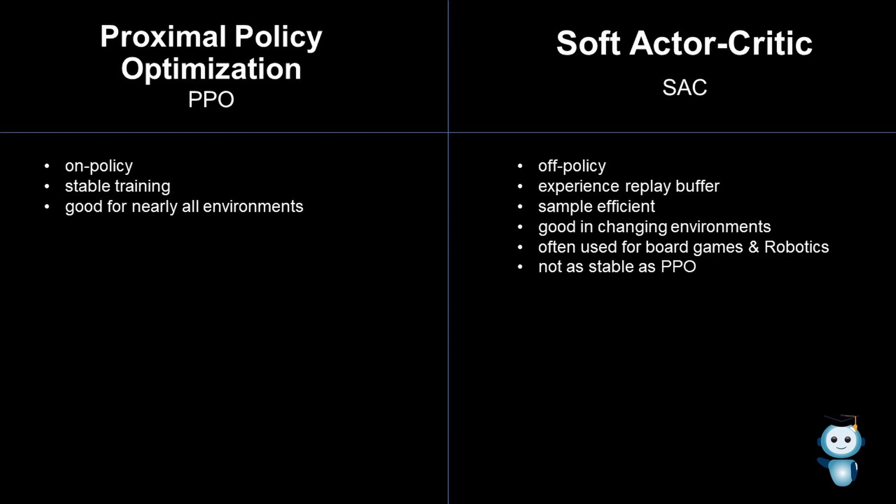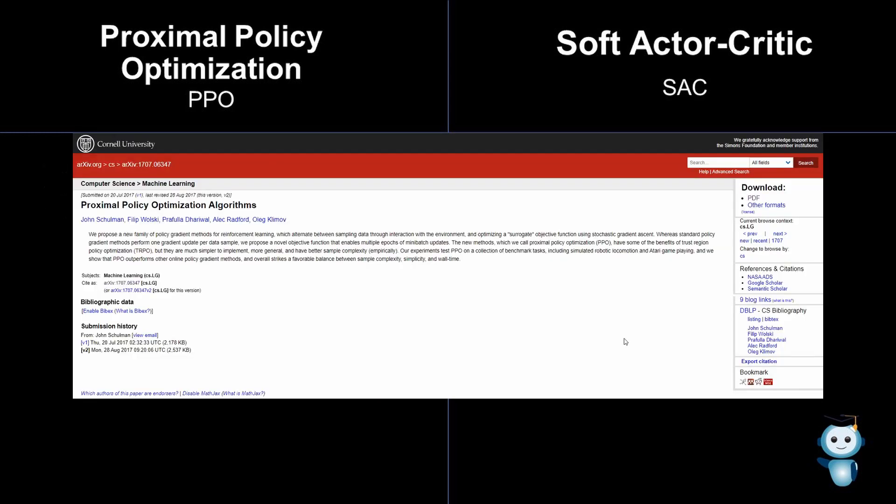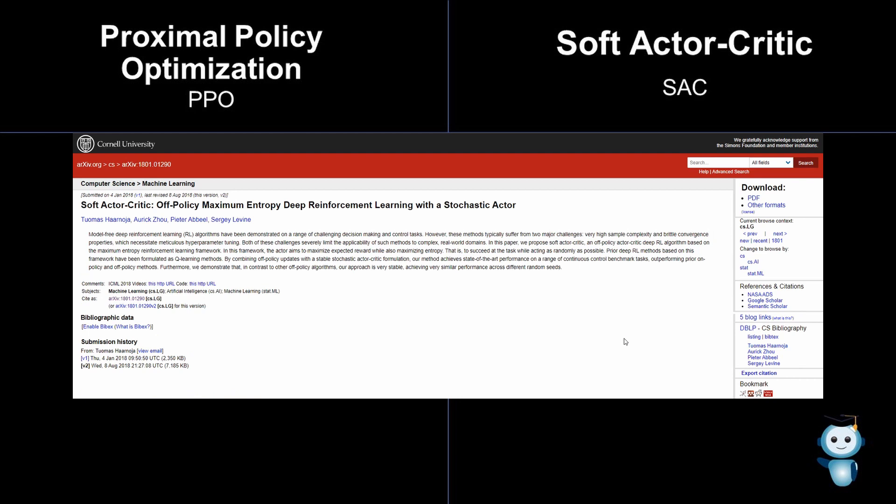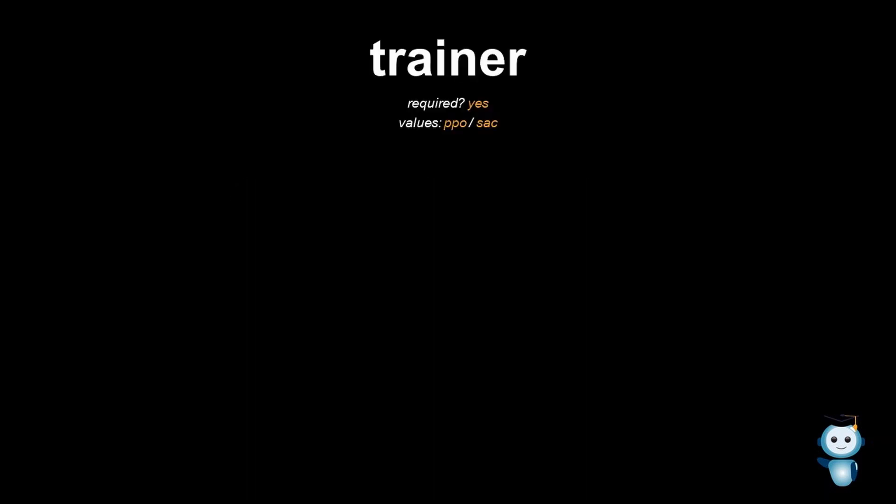I hope I could provide some intuition about when to use which algorithm. If you want to dive deep into how the algorithms work, check out the video description — I have included links to the original papers. Let's head to the configuration. The first parameter that you should provide is named Trainer, and with it you can specify whether to use PPO or SAC.